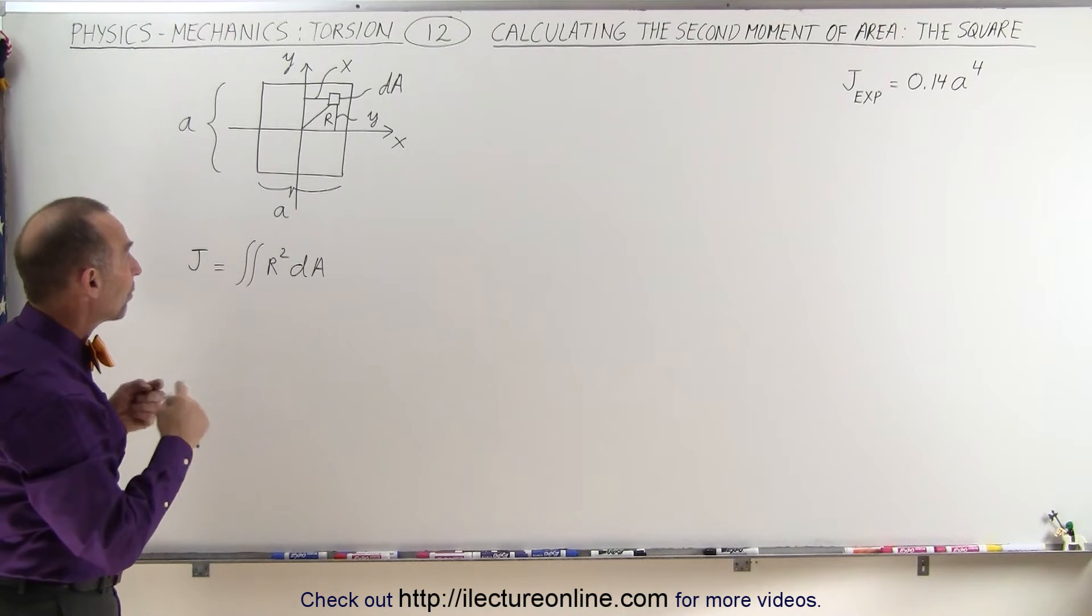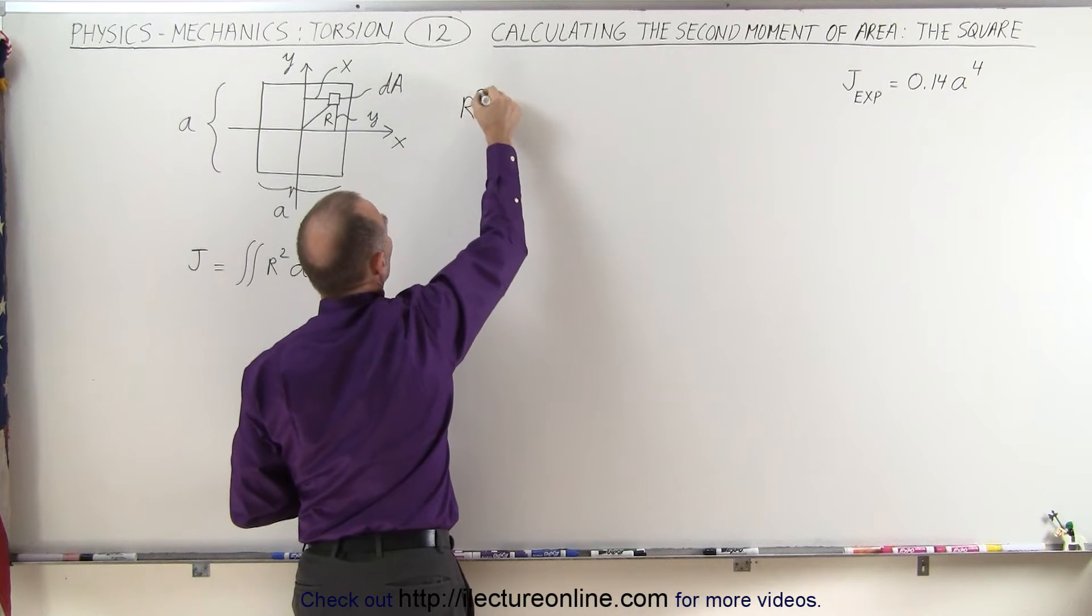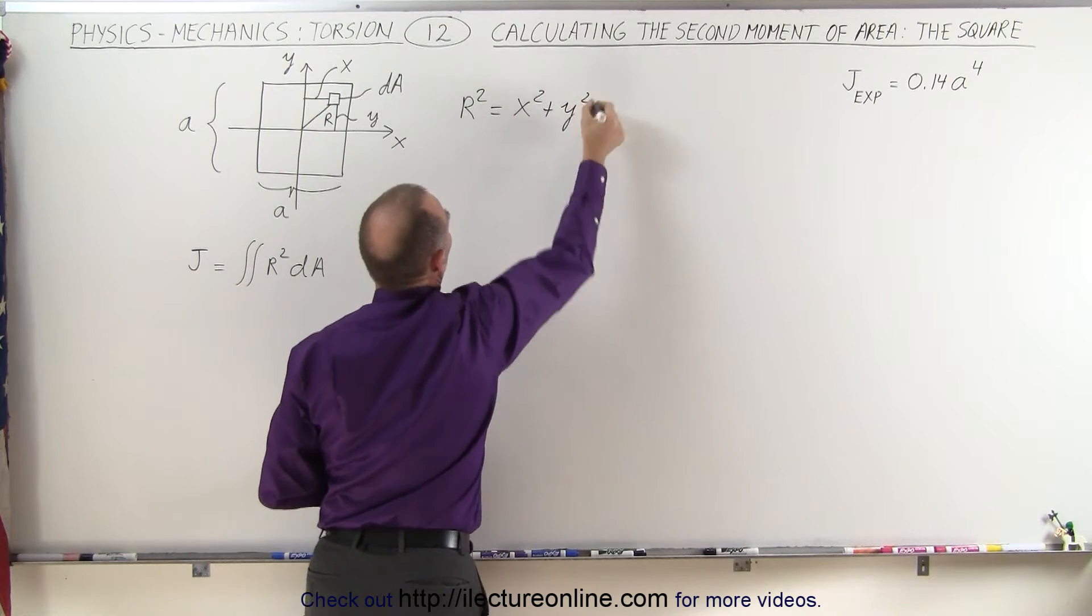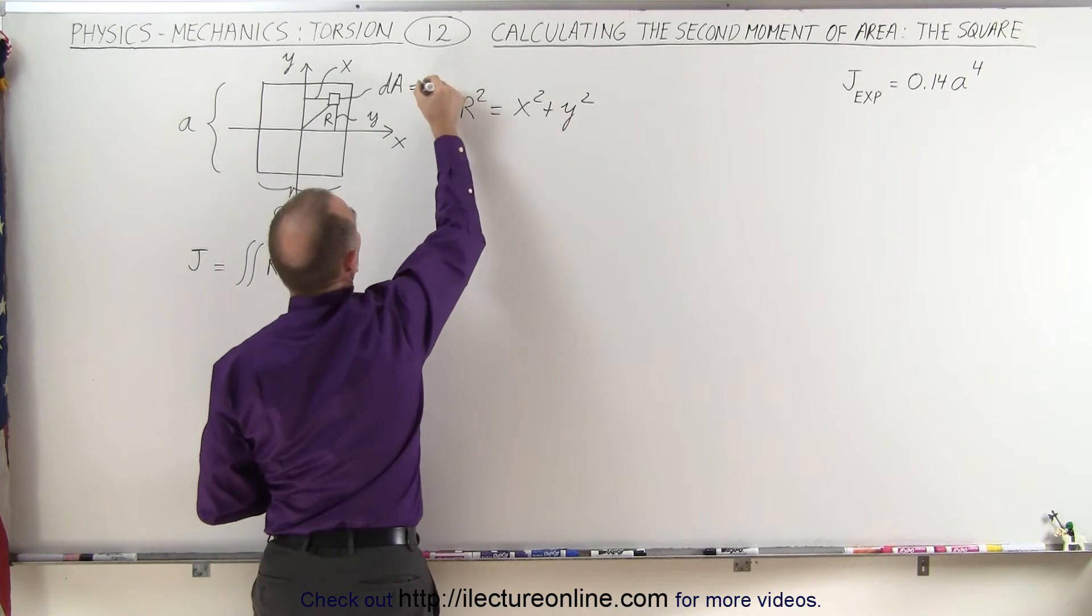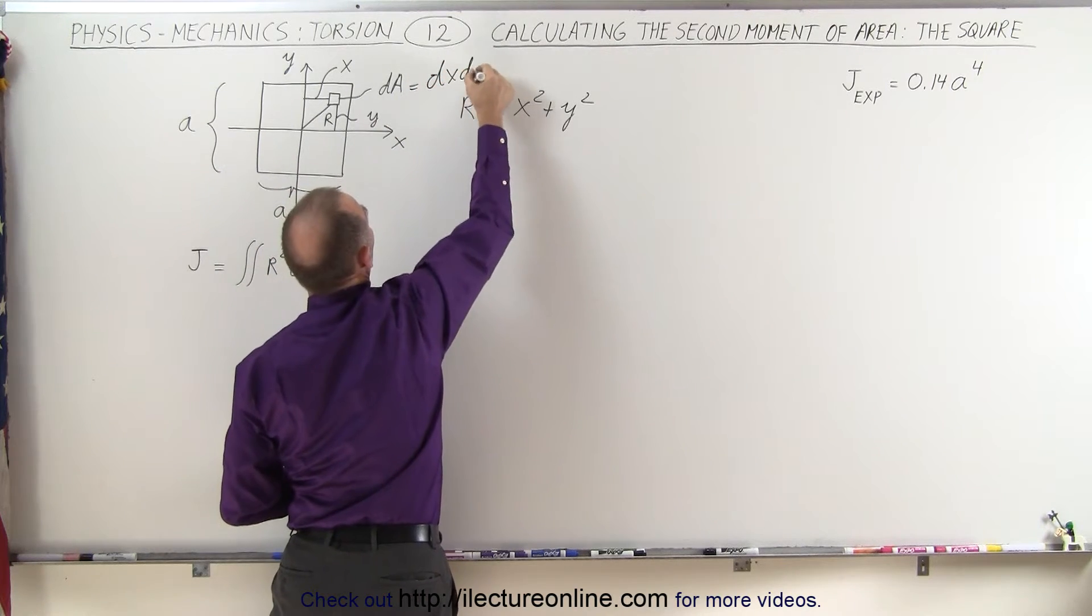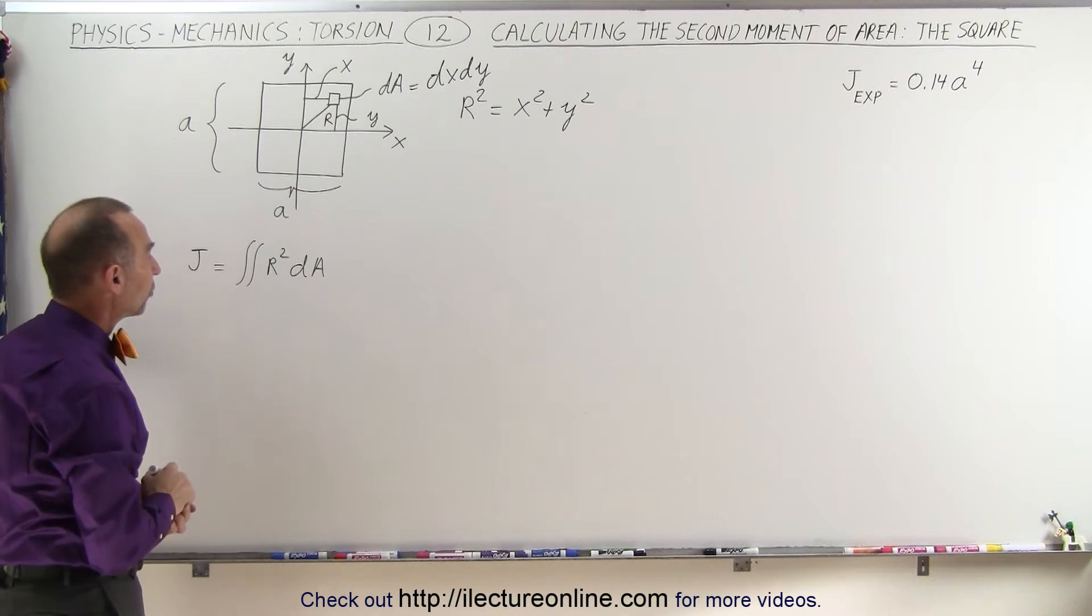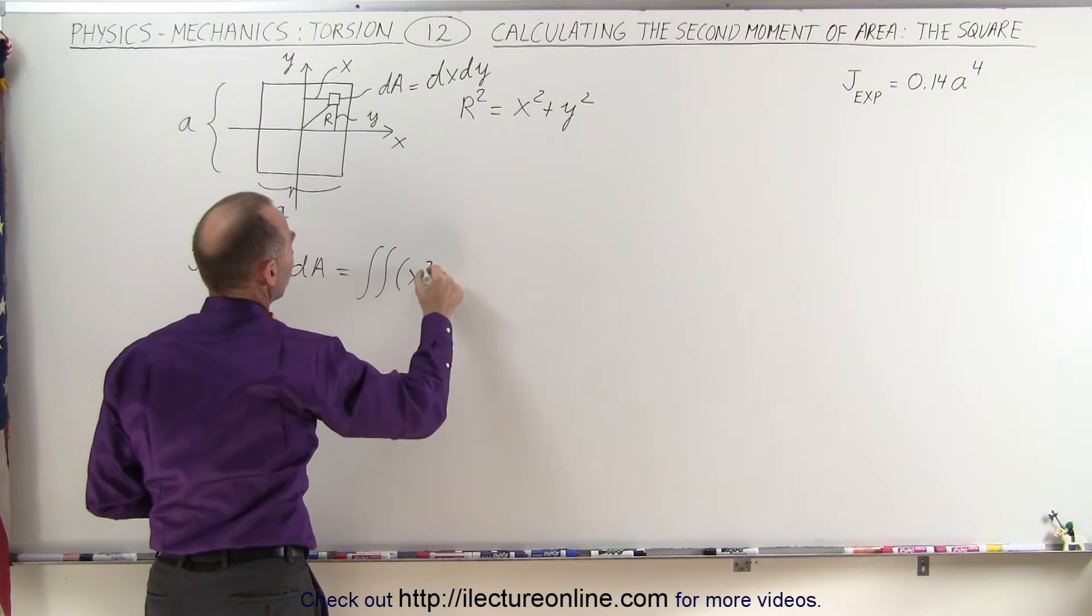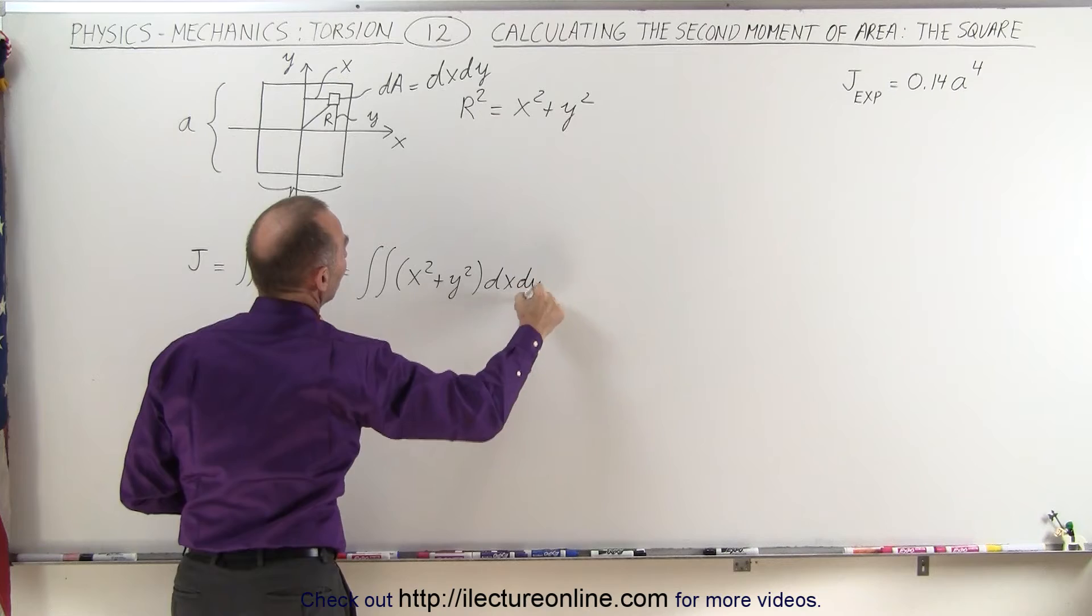Now, we can draw a relationship between R, X, and Y. We know that R squared, using Pythagorean theorem, is equal to x squared plus y squared. Since dA is going to be equal to dx times dy, it makes sense to rewrite R squared as x squared plus y squared, which means that this now becomes a double integral of the quantity x squared plus y squared times dx times dy.